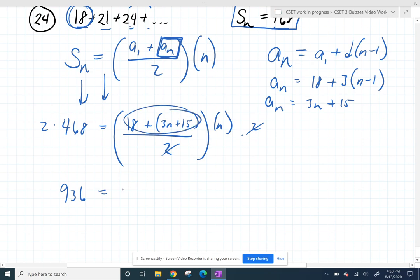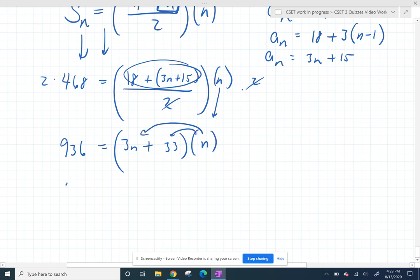If I add those together, I get 3n plus, what is that, 33, and then still times that n there. And if I distribute the n, I get 936 equals 3n squared plus 33n. So now we have a quadratic.